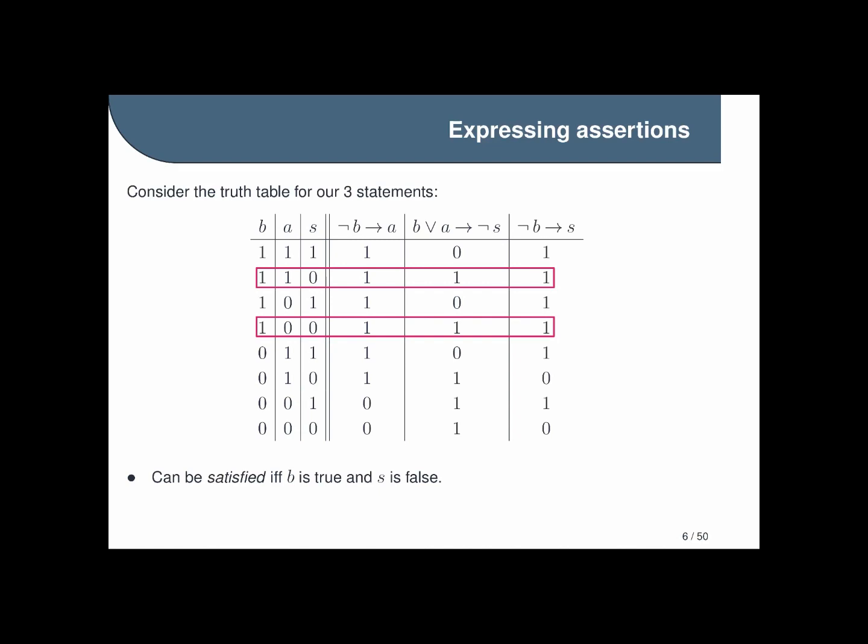Finding values that satisfy all of our statements at the same time is called satisfying our set of statements. And in this case it gives us some insight into what's going on. We can see in the two rows in which our set of statements is satisfied, b is true in both and s is false in both. So we can say that these statements can be satisfied if and only if b is true and s is false. And on the other hand, a can be either true or false depending on which row we're in.